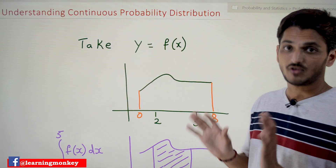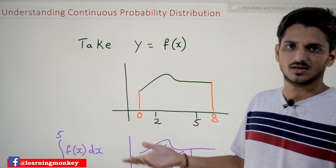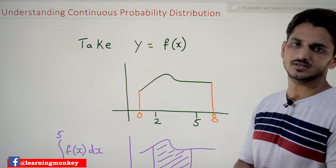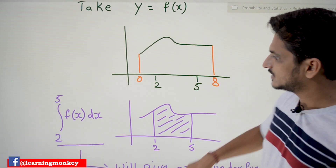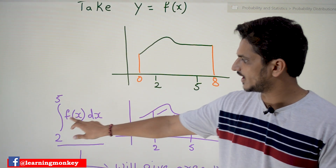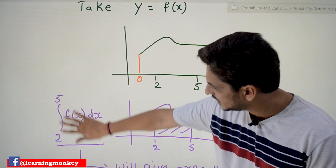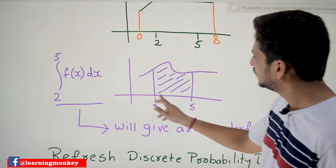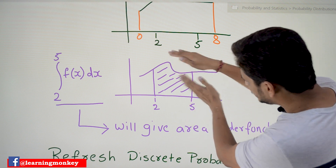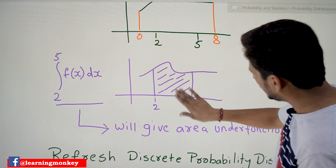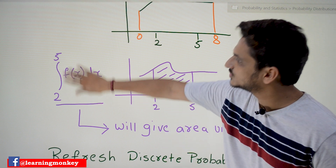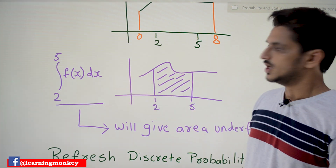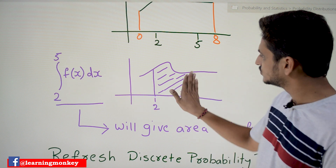y = f(x) is a function. Assume that this function exists from 0 to 8, and the function looks like this. From our basic mathematics, the integral from 2 to 5 of f(x) dx — if you do this calculation, what you are going to get is the area under this function from 2 to 5. That dotted lined area is what the integral provides. We are going to use this concept in our continuous probability distribution.